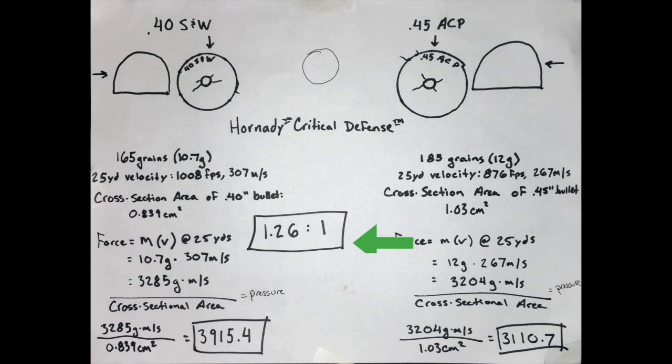You can see here that by a ratio of 1.26 to 1, the 40 Smith & Wesson actually has higher impact force than the 45 ACP, due largely to the difference in velocity between 1008 and 876 feet per second. Although the 45 is a wider, heavier round, the narrower, faster, lighter round impacts its target with much greater force.